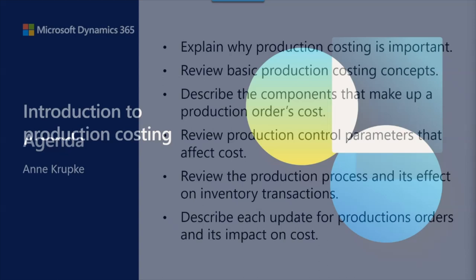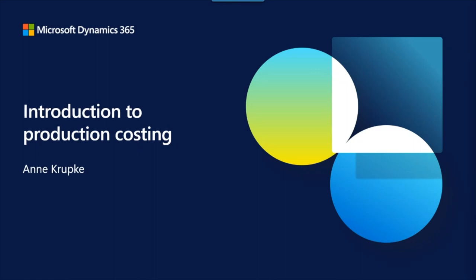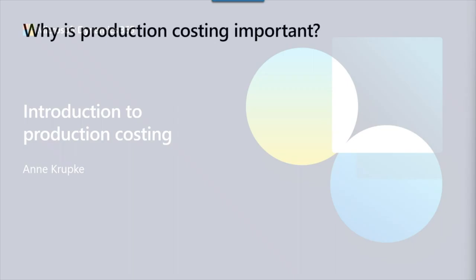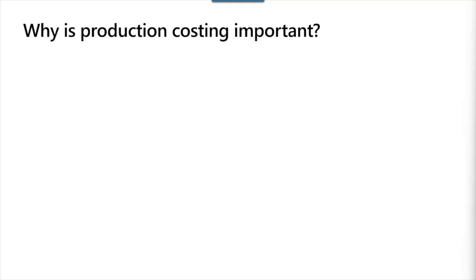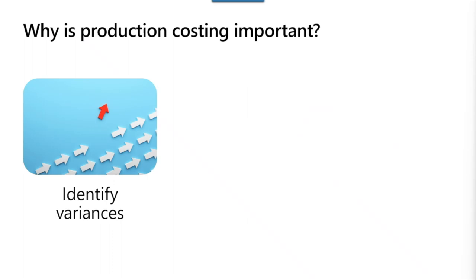As we dive into today's topic of production costing, let's talk first about some high-level concepts. No matter what costing methodology you're using, there are several reasons why production costing is important. First is the ability to track variances. When you use standard costing, analyzing variances is even easier because you can track those changes in your general ledger. Analyzing variances can help your organization spot when there is a problem or a shift in the market or supply chain. Variants can come from equipment not operating sufficiently, a change in worker behavior, change in purchase costs, and much more.